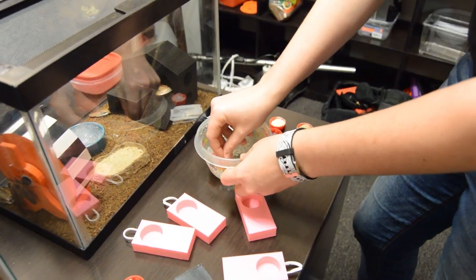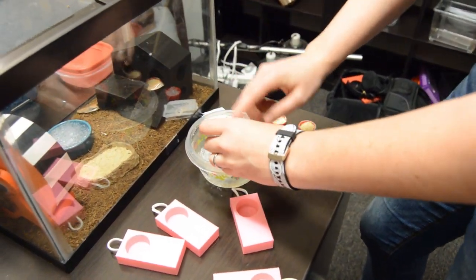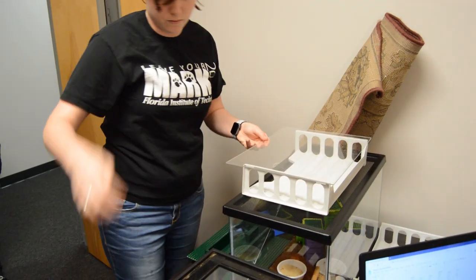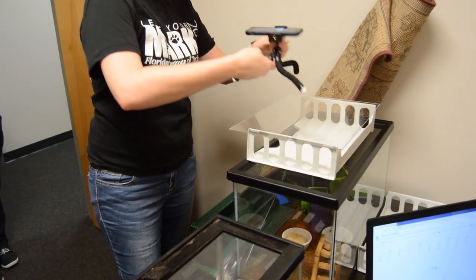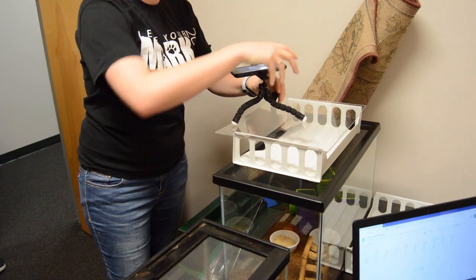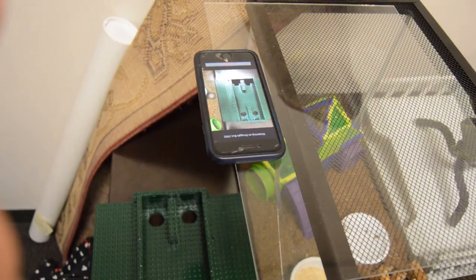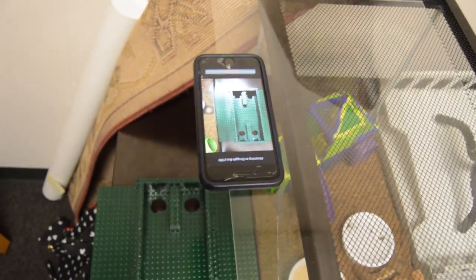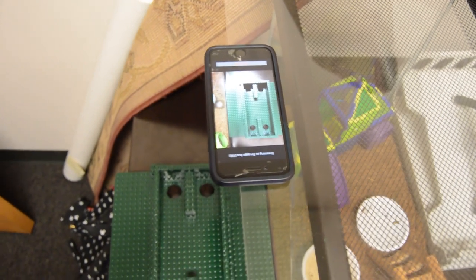What we do is we run each roach three times on three different days. Each roach only gets tested one time per day and it's a 10-minute trial. Each 10-minute trial will consist of a combination of either sugar water,